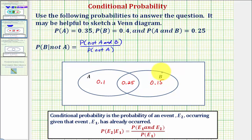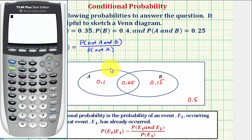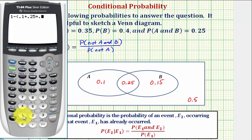We also want to find the probability of not A and not B, or the probability of being in the outer region. The probability of only being in the outer region would be one minus the sum of these probabilities, which would be 0.5. We find this by taking 1, the probability of being in the universal set, and subtracting the sum 0.1 plus 0.25 plus 0.15, giving us the probability of being in the universal set but not in A and not in B.